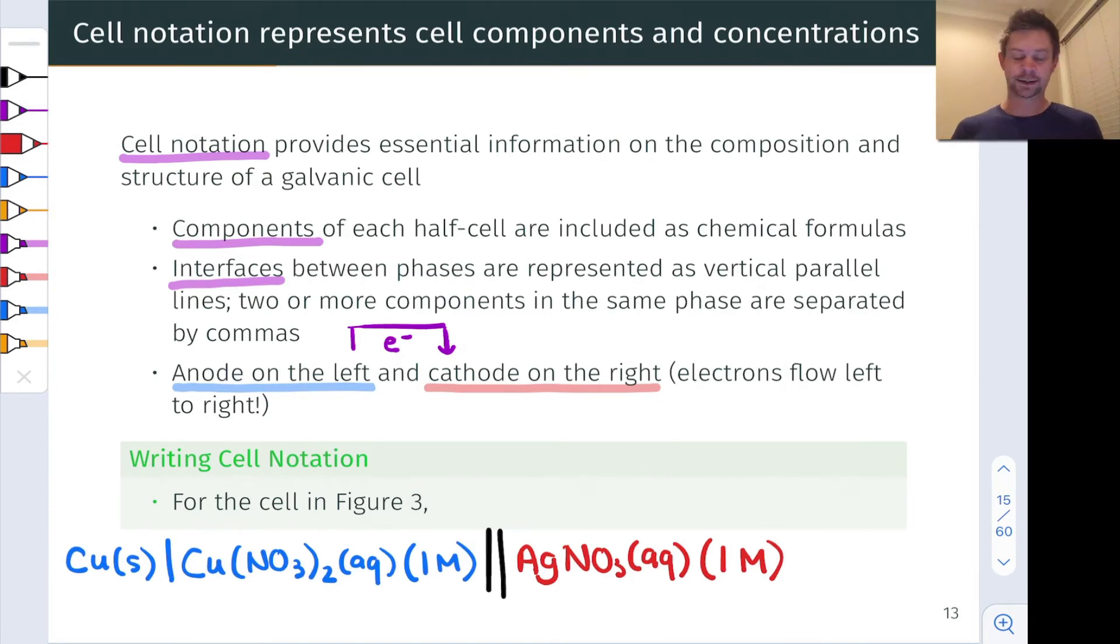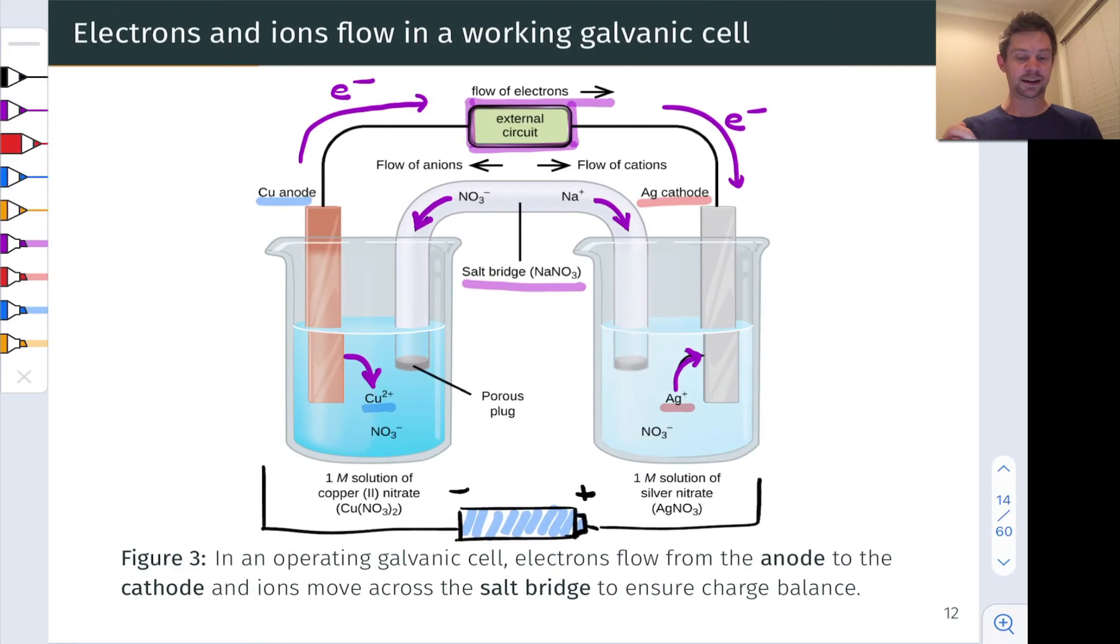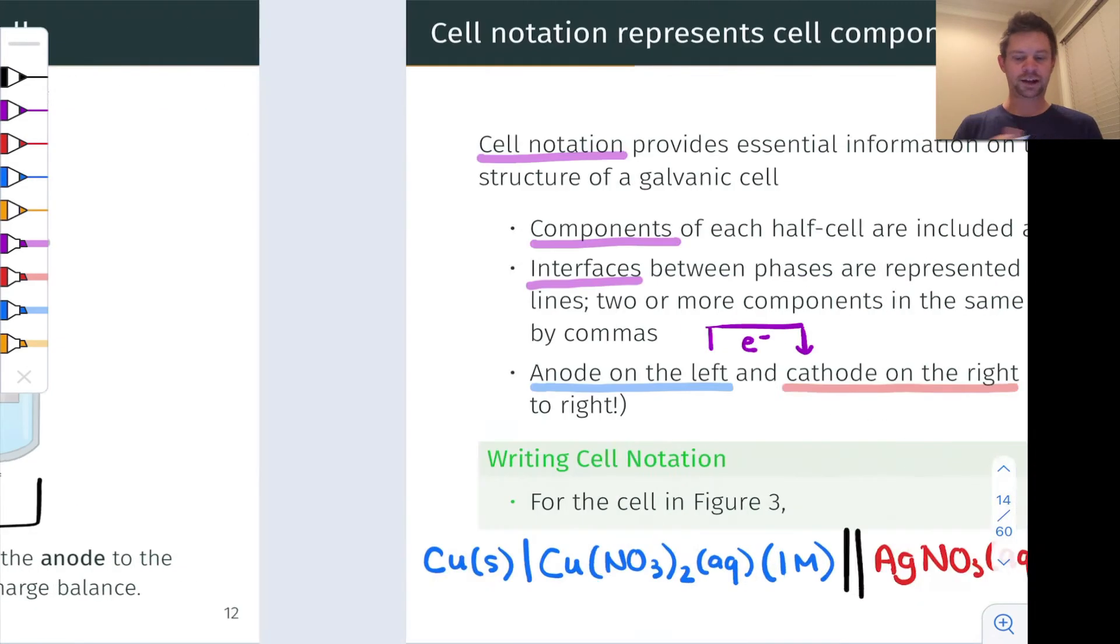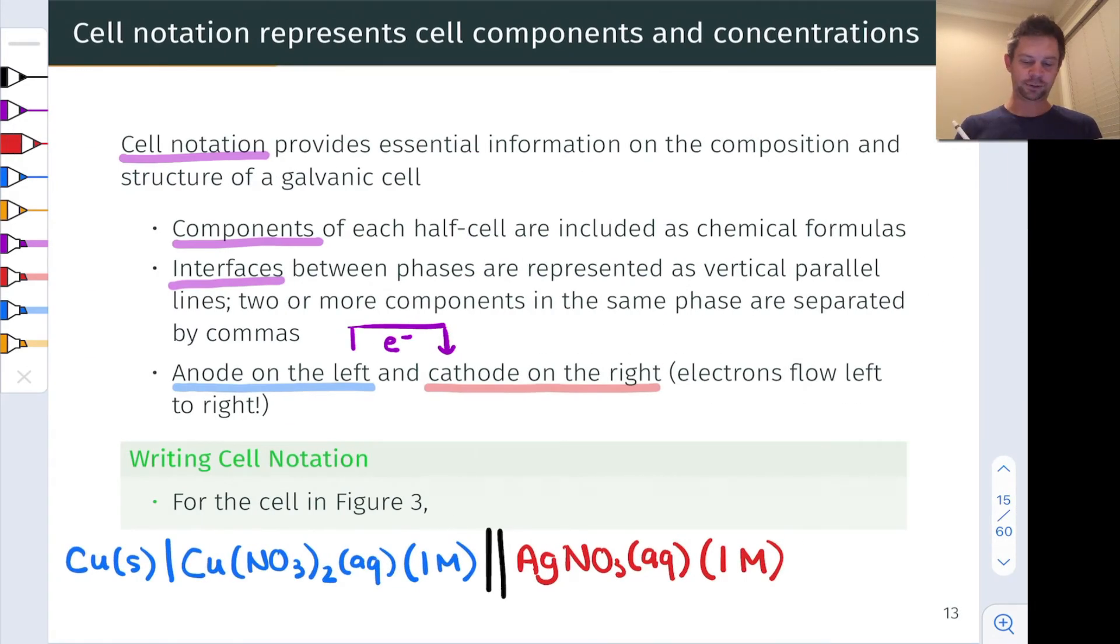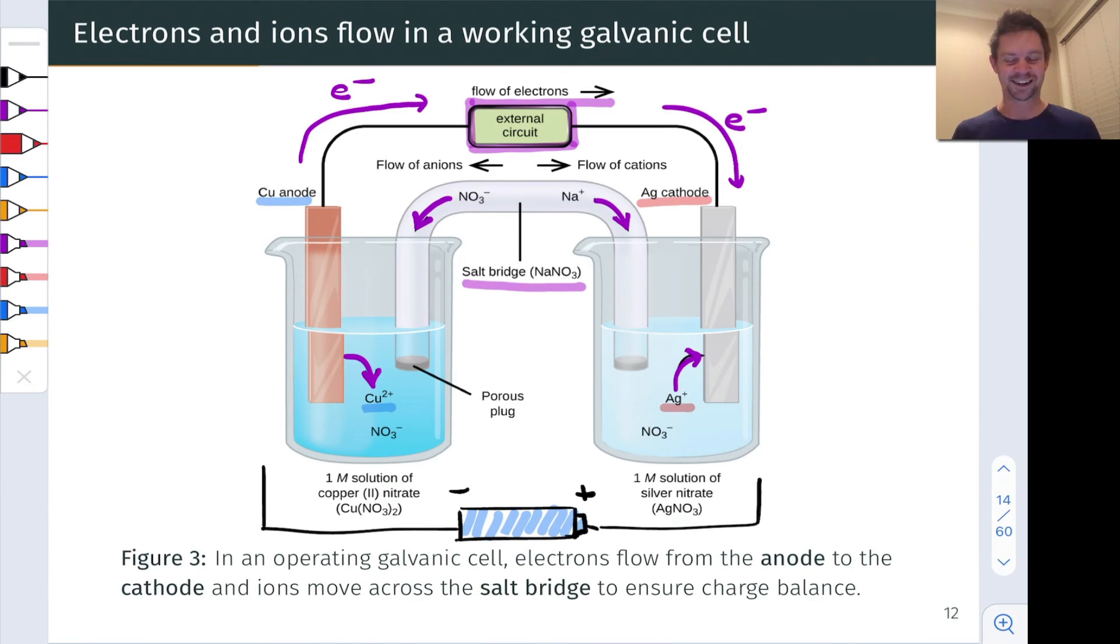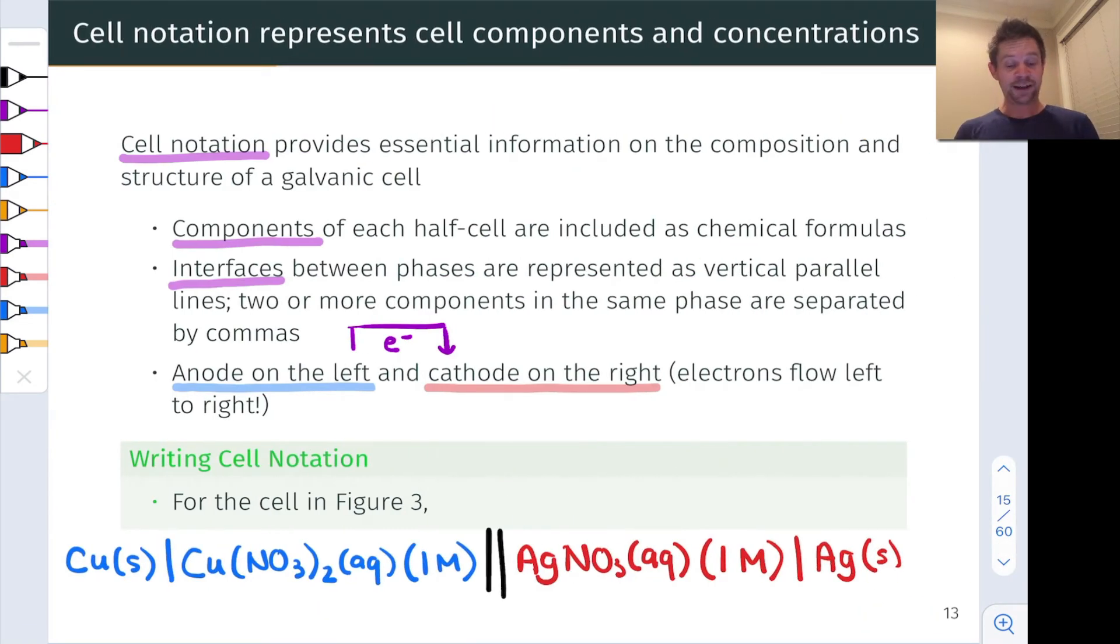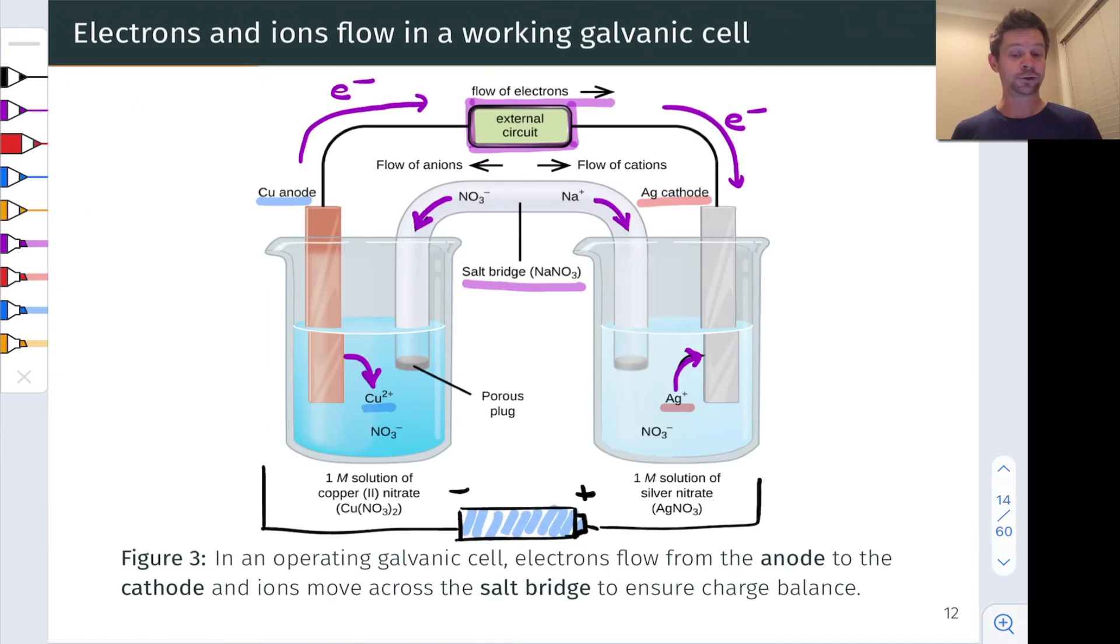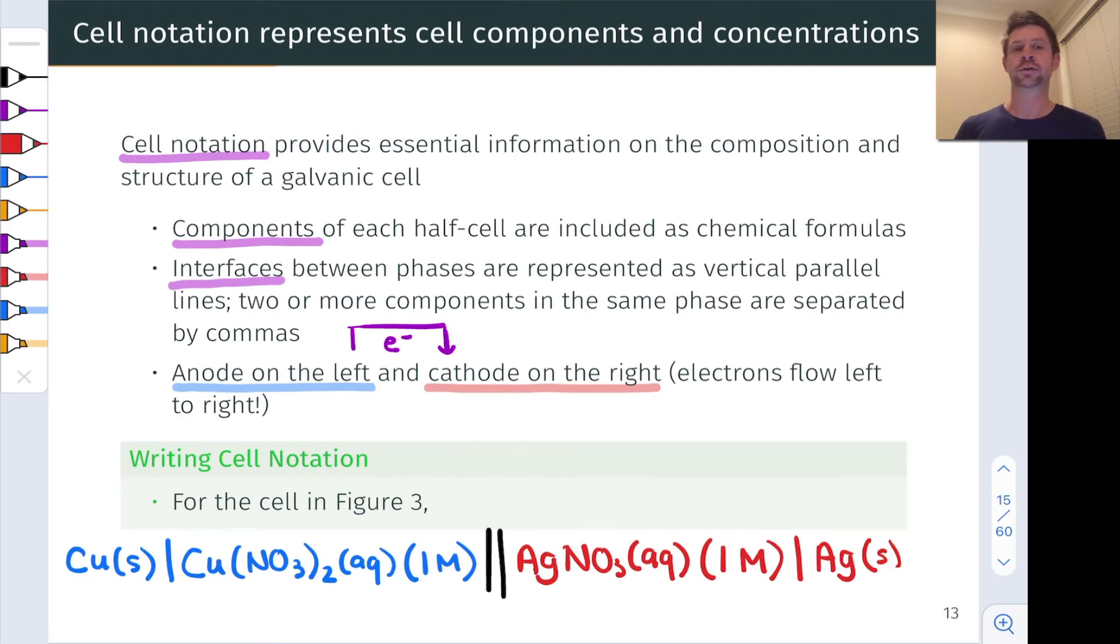When that silver plus cation is reduced, we end up with silver metal. This is in a solid phase distinct from the aqueous solution. We're going to use a single vertical line to separate out that solid silver phase and write Ag(s) here. For the solids, we don't need any measure of concentration, since those are not thermodynamically important. From this information, we could reconstruct the picture in figure three, including the concentrations of copper two and silver one in the galvanic cell.